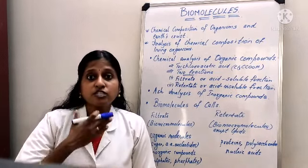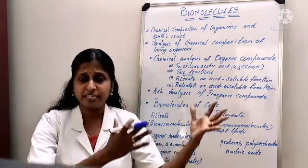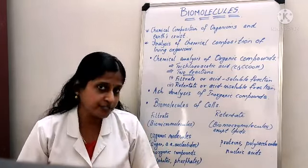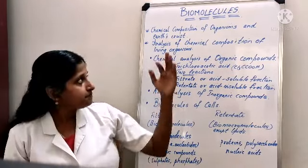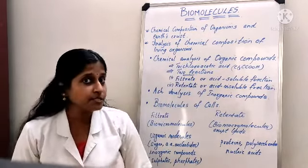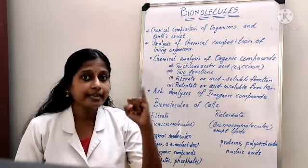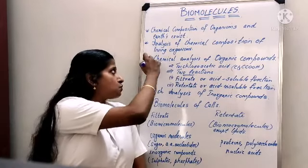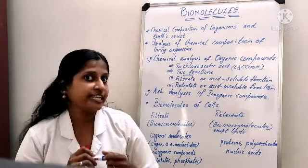If I want to learn what molecules are present in my body, or in a plant or any animal, we have to go for analysis. For analyzing the chemical composition of living organisms, there are two types of analyses: one is chemical analysis and the second one is ash analysis.